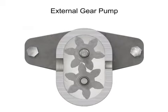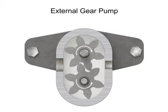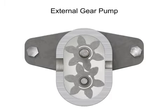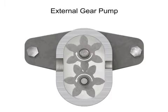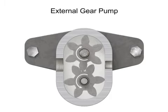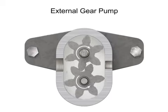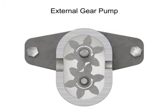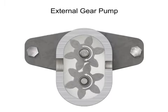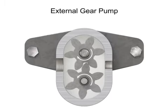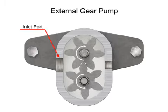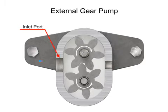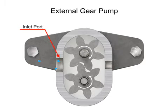As the gears rotate away from each other and come out of mesh, they create an expanding volume on the inlet side of the pump. This creates a vacuum at the inlet port, allowing fluid to flow into the pump.